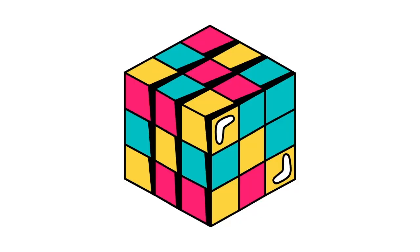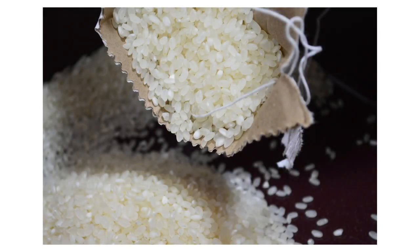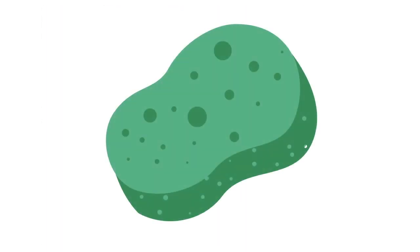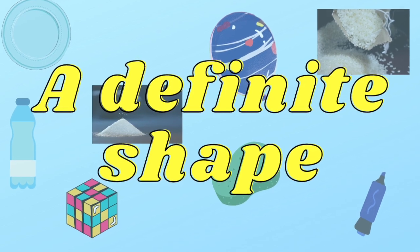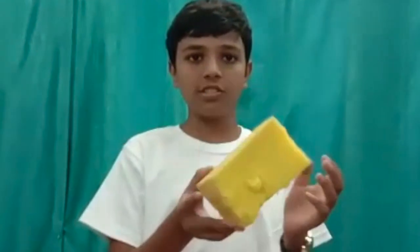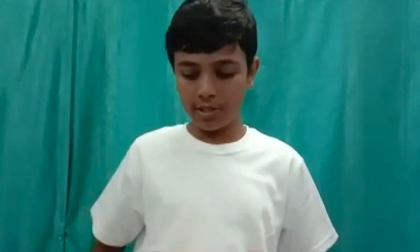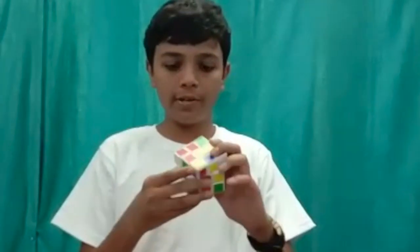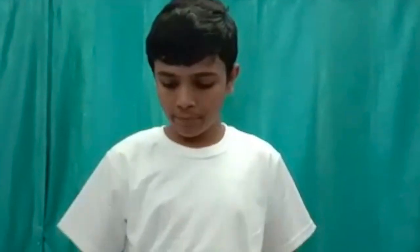The things displayed here include a wooden plank, a marker, a plate, a cube, sugar, a bowl of rice, a sponge, and a water bottle. All these things have, number one, a definite shape. For example, this sponge, as you can see, is a cuboid. This Rubik's cube is a cube. And this plate is circular.